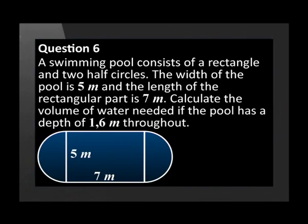Question six asks us to find the volume of a swimming pool. The pool consists of a rectangle and two half circles. The width of the pool is 5 meters and the length of the rectangular part is 7 meters. Calculate the volume of water needed if the pool has a depth of 1.6 meters throughout.